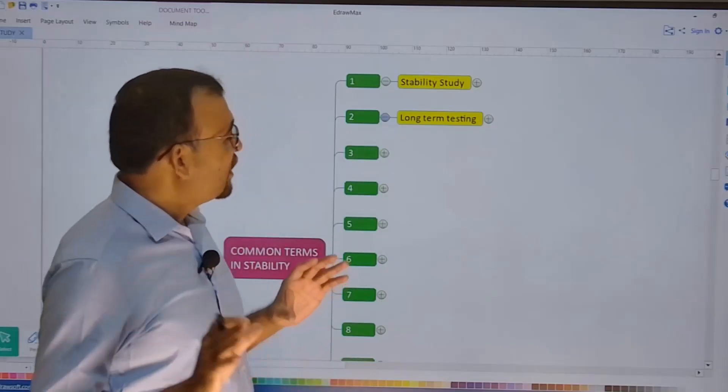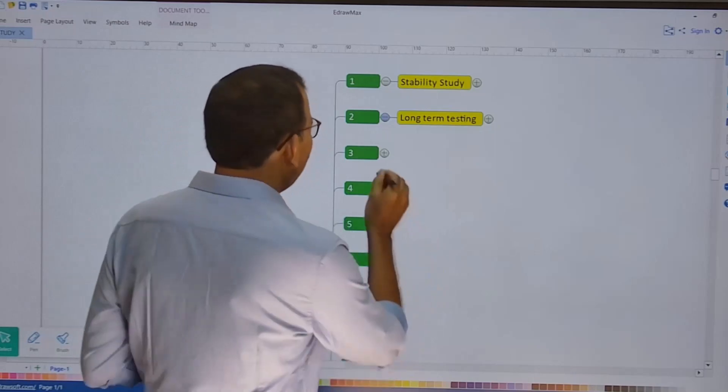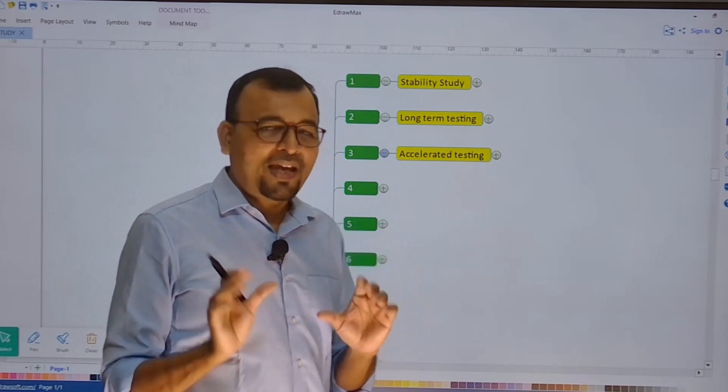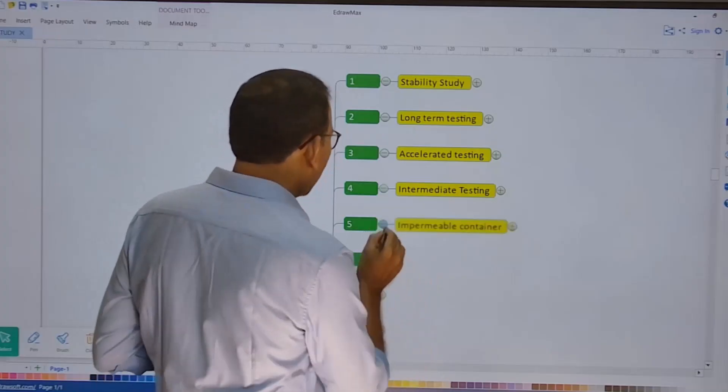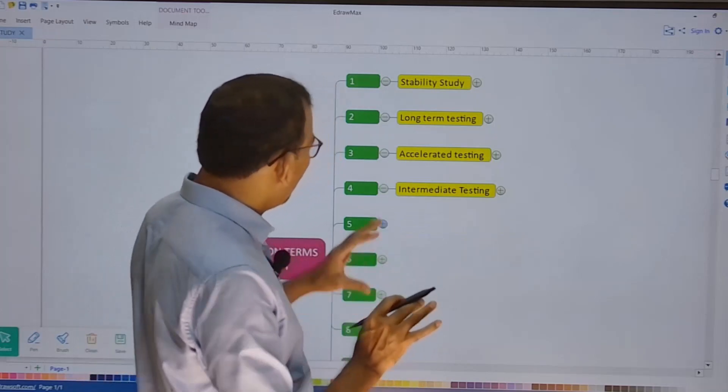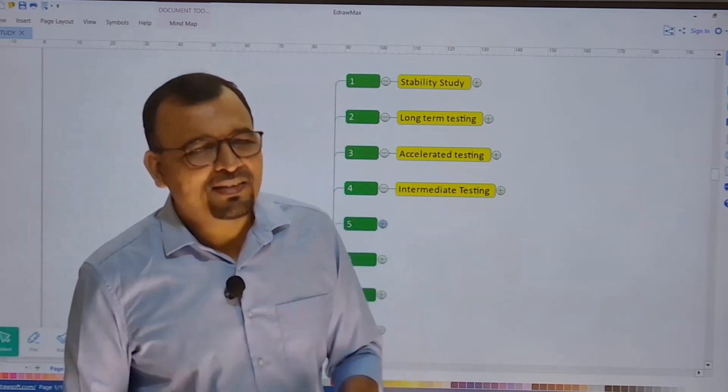The second point is about the long-term testing conditions. What is meant by long-term testing? The third important common term is what is meant by accelerated testing? The fourth one is what is meant by intermediate testing? And the fifth one is, I will talk about these four terms in this video and the next common terms will be discussed in the next video.